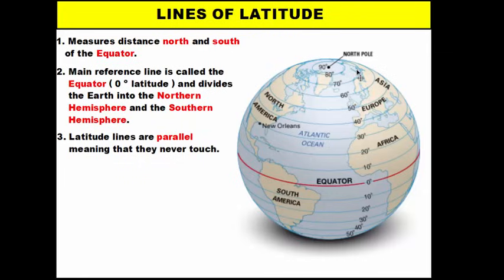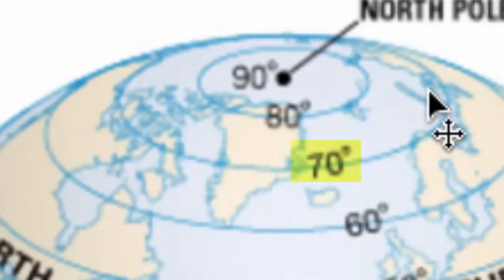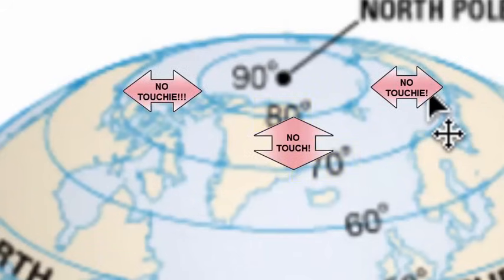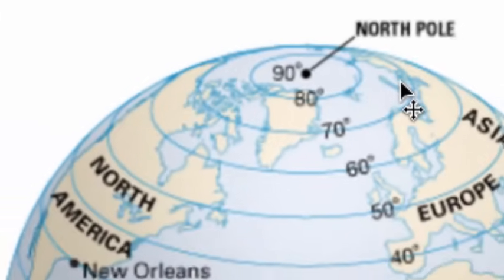Latitude lines are parallel — they never touch and they don't intersect. For example, the 70 degree north line and the 80 degree north line both go around the globe but never touch each other. Remembering that these are parallel lines also helps you remember them as latitude lines.